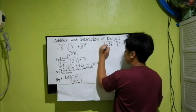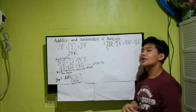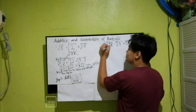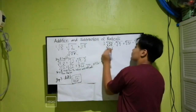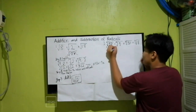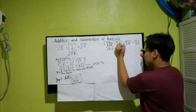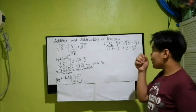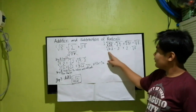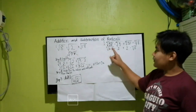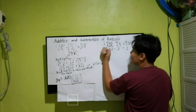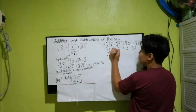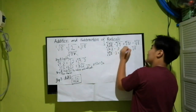We need to simplify. Fourth root of 32 — what are the factors of 32 that are perfect to the fourth power? That's 16, and 16 multiplied by 2. The fourth root of 16 simplifies to 2, so fourth root of 32 becomes 2 times fourth root of 2. Square root of 4 simplifies to 2. So we now have: 2 fourth root of 2 minus 2 plus 2 minus fourth root of 8.